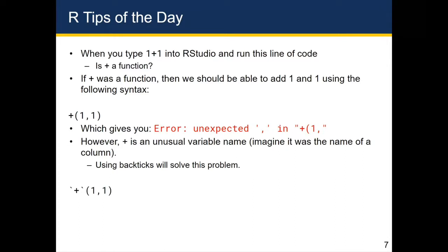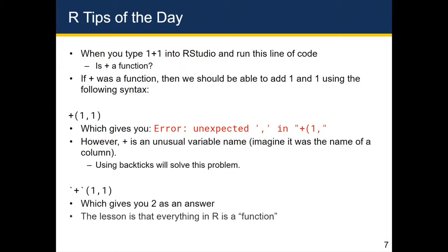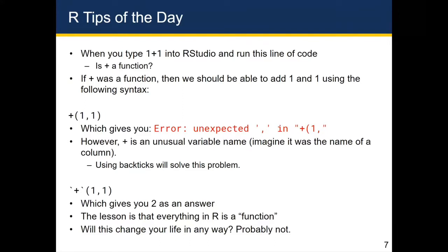If you run the plus function surrounded by backticks with one comma one, you'll get the right answer of two. The main lesson here is that everything in R is a function — even a plus is a function. And one funny thing about that is you could actually redefine plus to mean minus, such that when you try to add one and one, you get back zero instead of two. You definitely wouldn't want to do that because it could result in a lot of errors in your code. But this is actually how ggplot is able to redefine the meaning of plus in order to add different components of a plot together, and you'll see this syntax as we get into the meat of ggplot in the following slides.